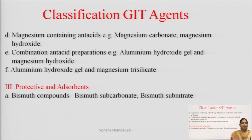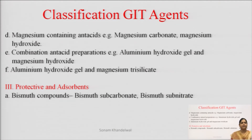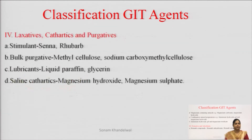Third jo humari category hai woh hai protective and adsorbents. Ismein hamare aate hain bismuth compounds, jaise ki bismuth subcarbonate, bismuth subnitrate — basically they contain bismuth.